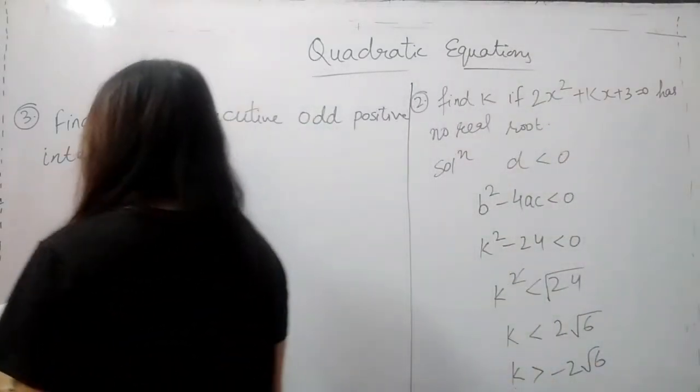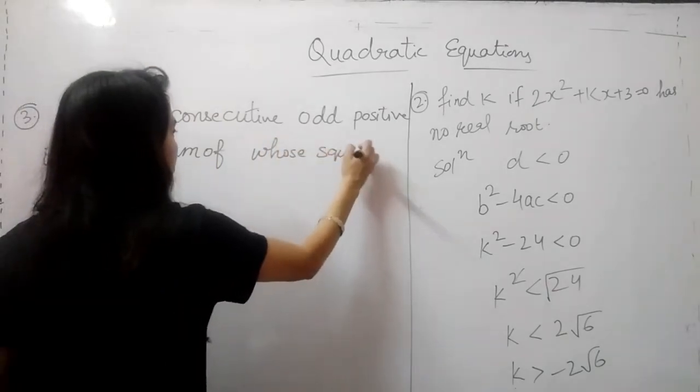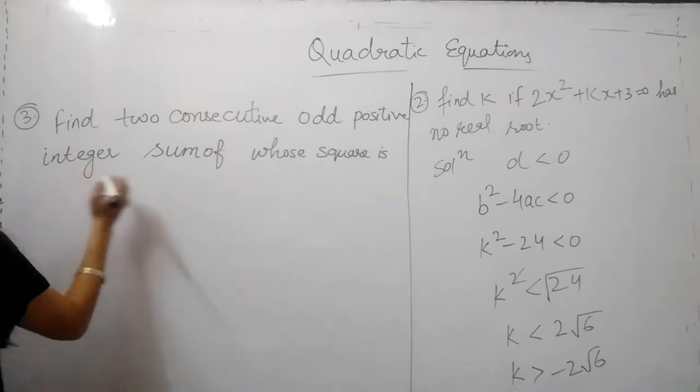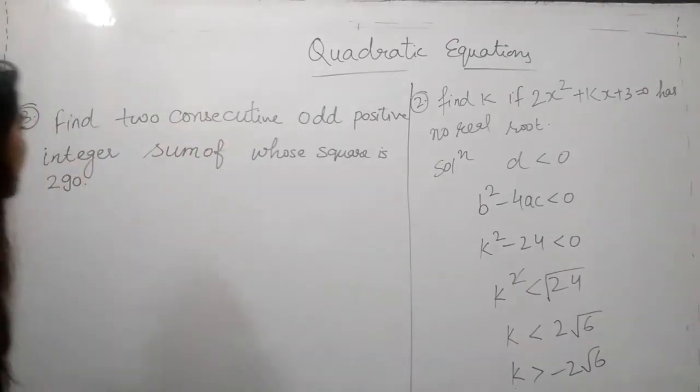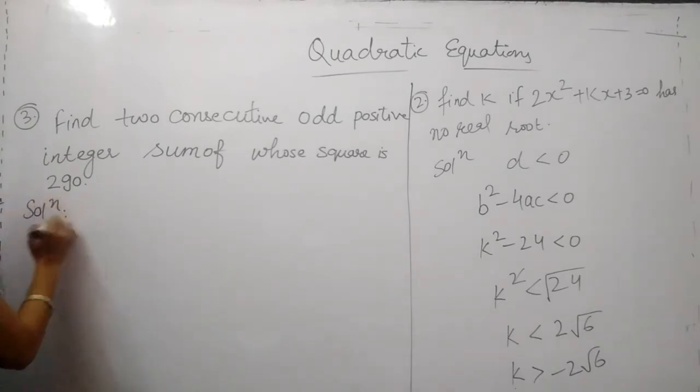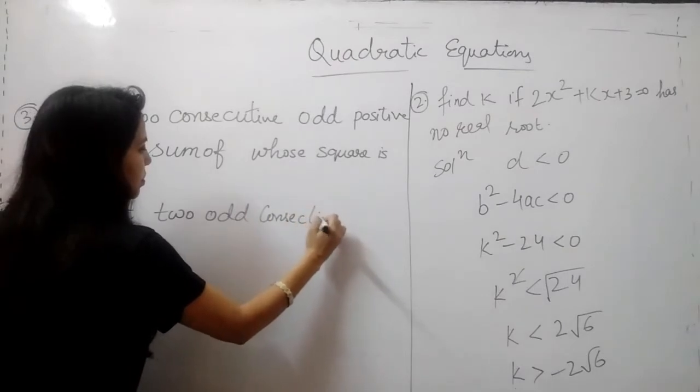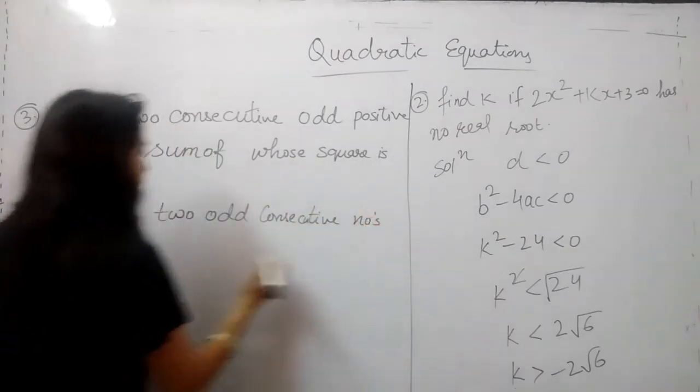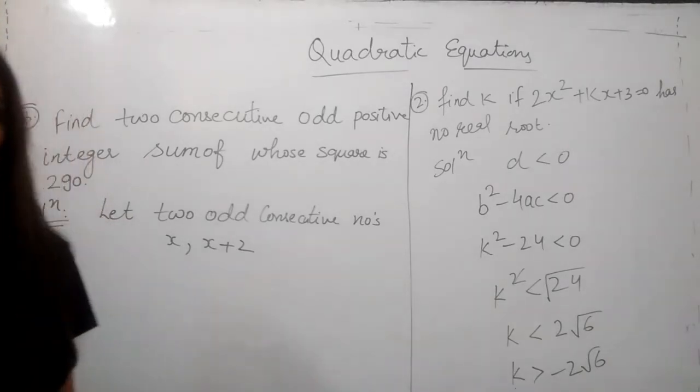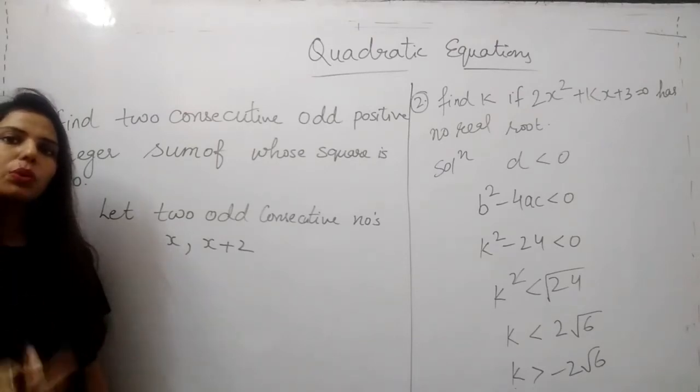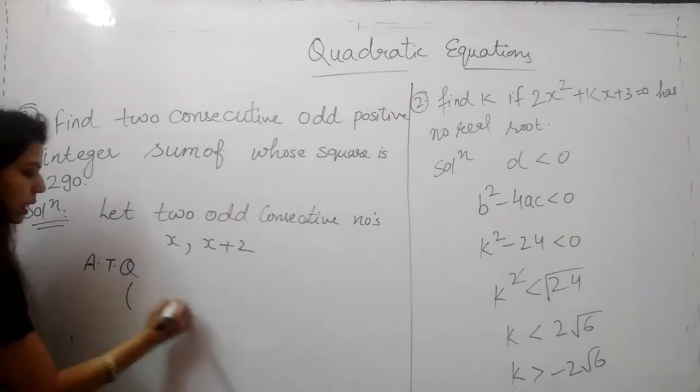So we need to find out those consecutive odd integers whose sum of squares is 290. So firstly we will take two consecutive odd numbers, let two odd consecutive numbers x and x plus 2.